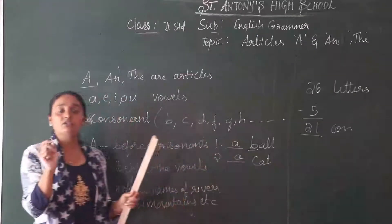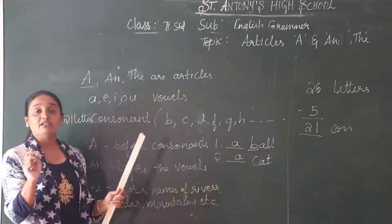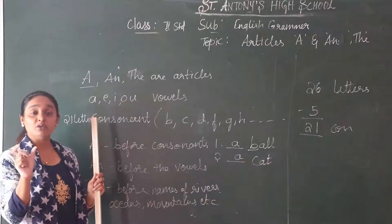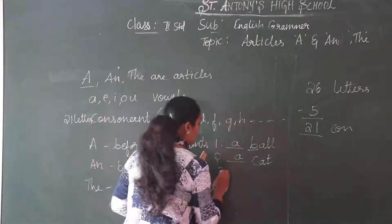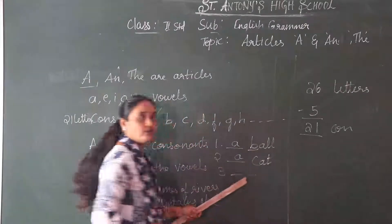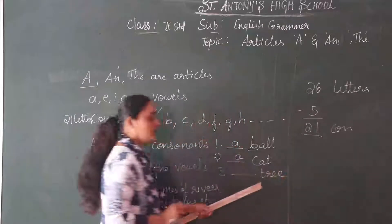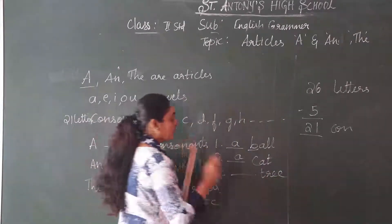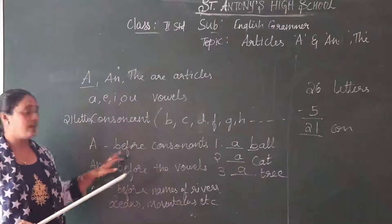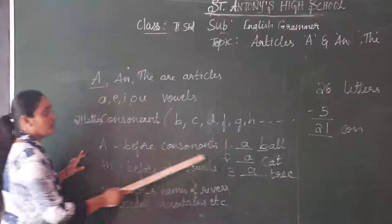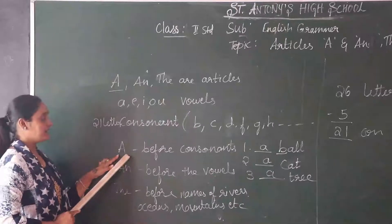So always A is used before a consonant, and it should always be a singular word. Last example — tree. T-R-E-E, tree. I am writing tree, single. A tree. T is also a consonant. Any doubts? So we saw how A is used. A is the article.